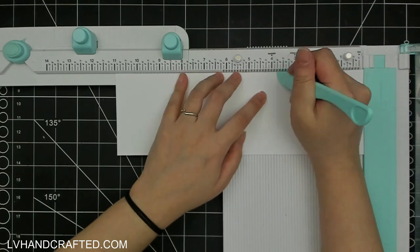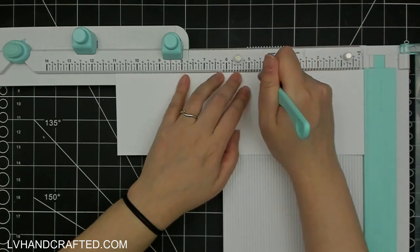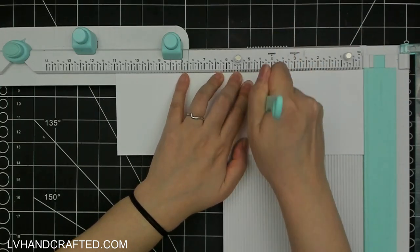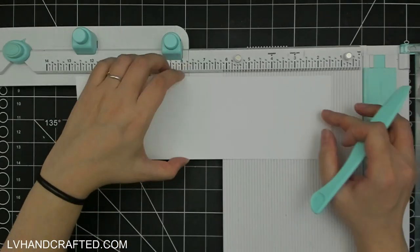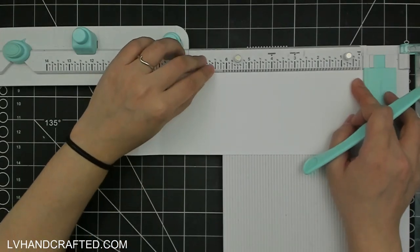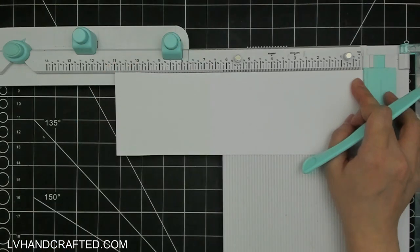That visible space above the first step and that scoreline ends up being at three and three quarters of an inch for the rise. And then for the fall I scored it at four and one half.